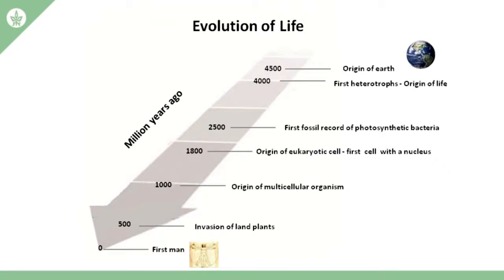The first billion years of life on Earth was only heterotrophic bacteria floating in the ocean. Only about two and a half billion years ago, the first photosynthetic, the first autotrophic bacteria appear, at least in the fossil record. From a philosophical point of view, heterotrophy is simpler than autotrophy — it's much easier to eat than to produce your own food. So the first organisms that evolved were the simple consumers, the heterotrophic bacteria, and only later do we see the evolution of the more complex autotrophic bacteria.